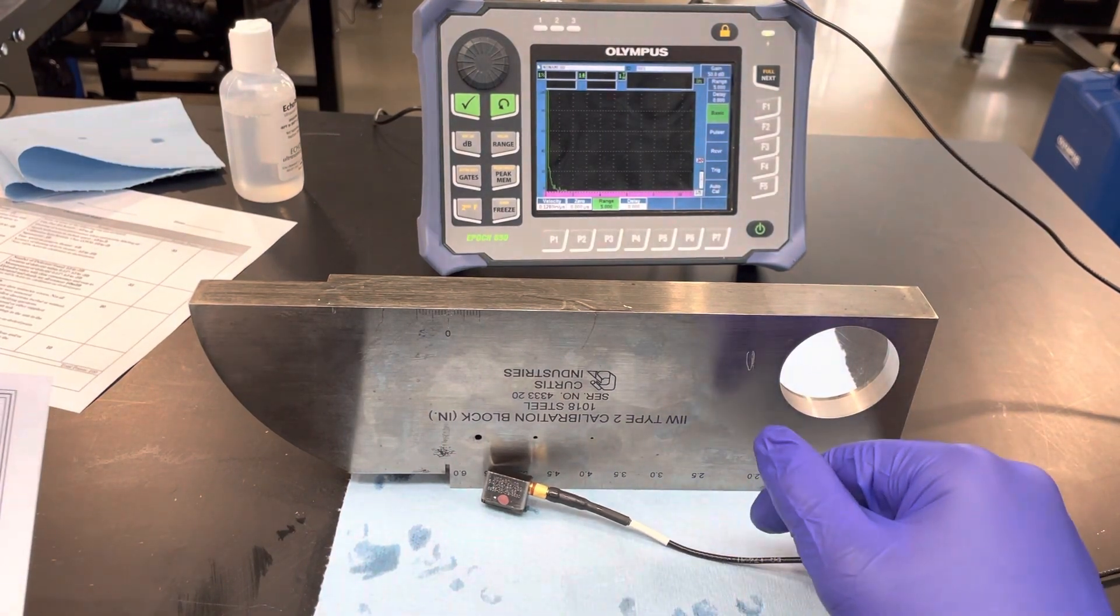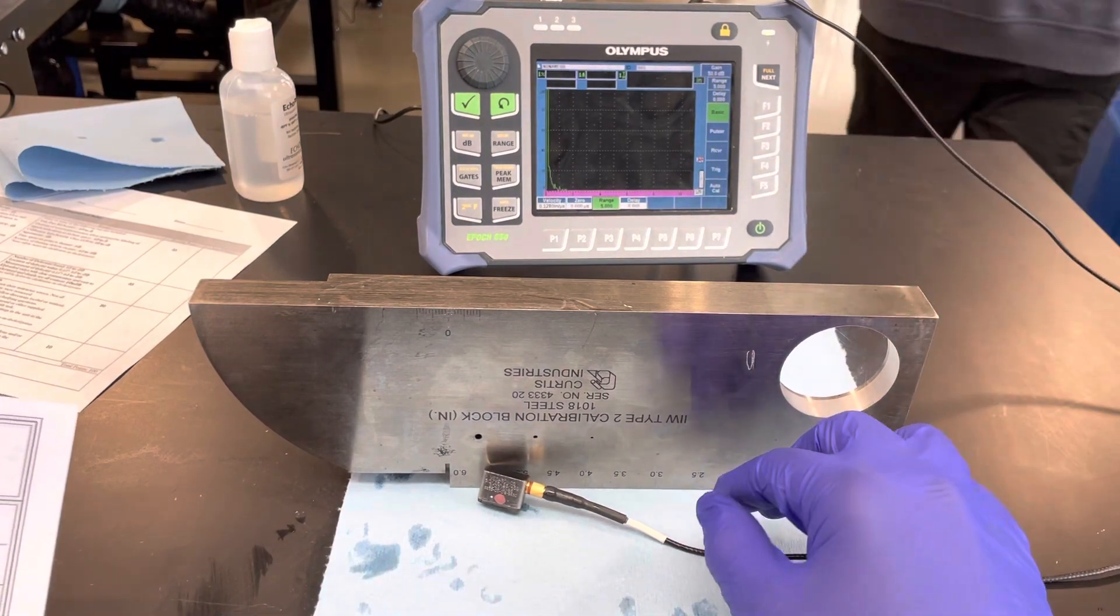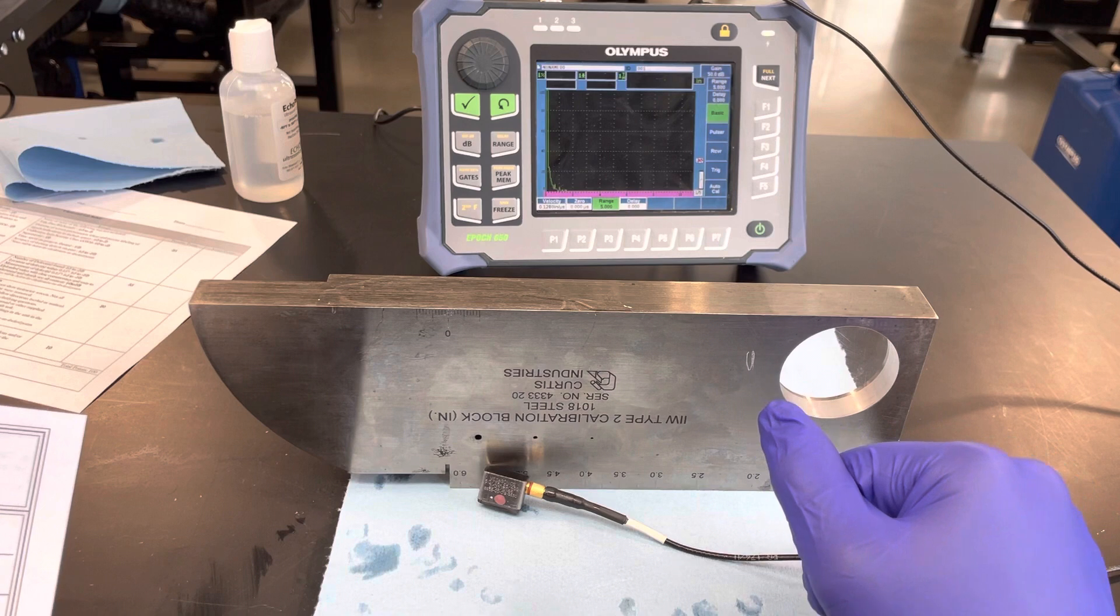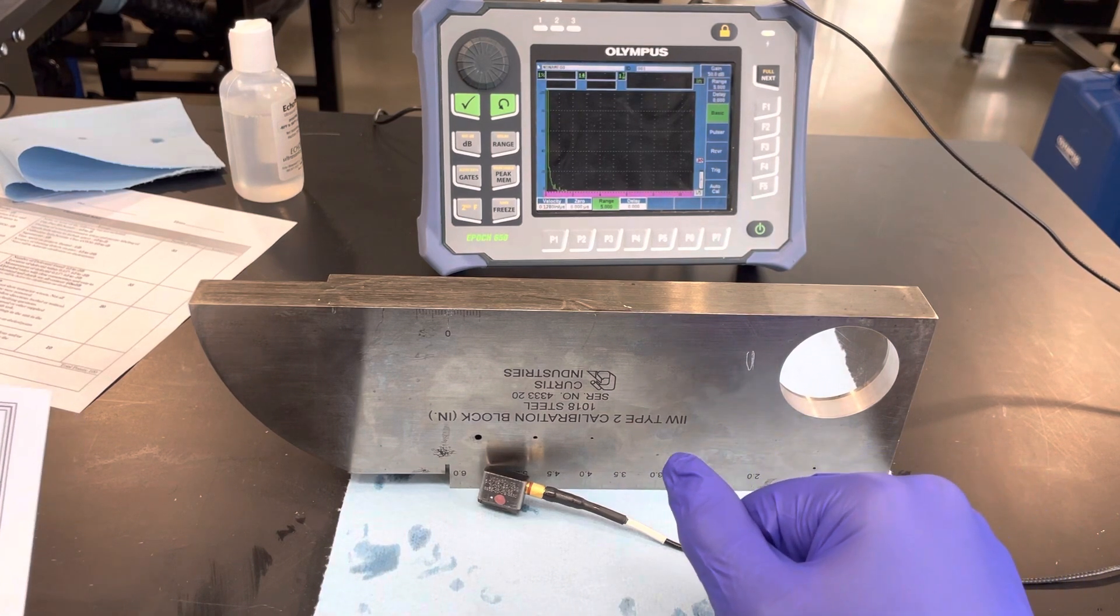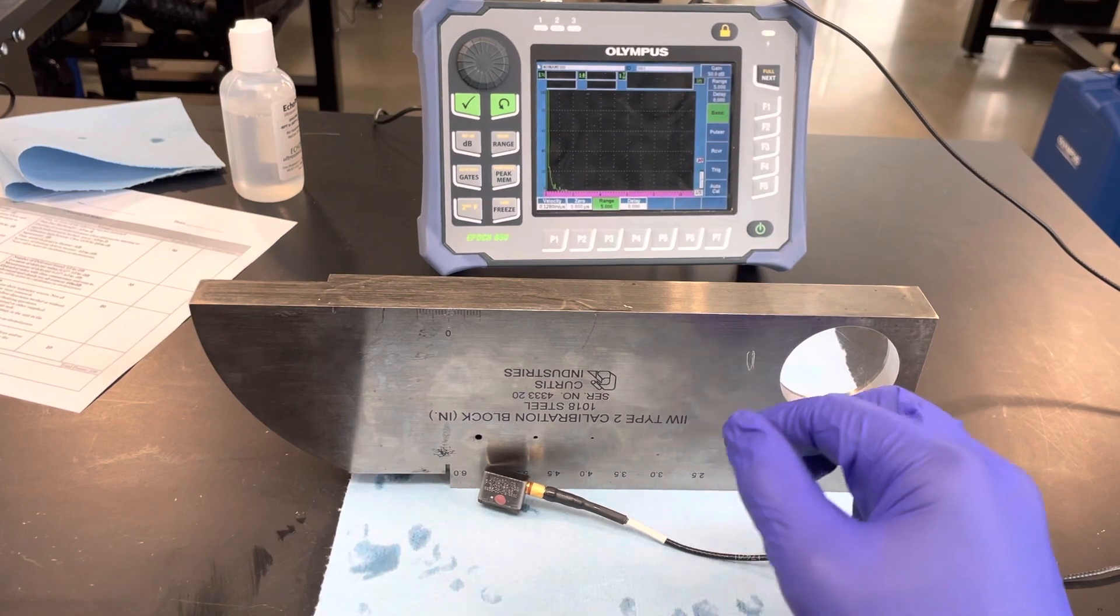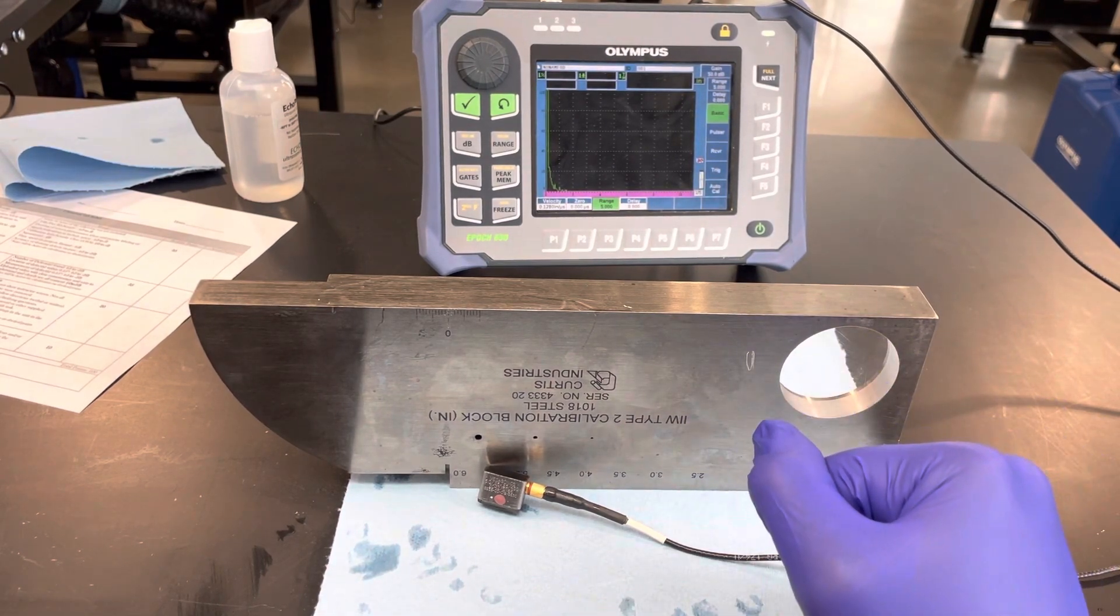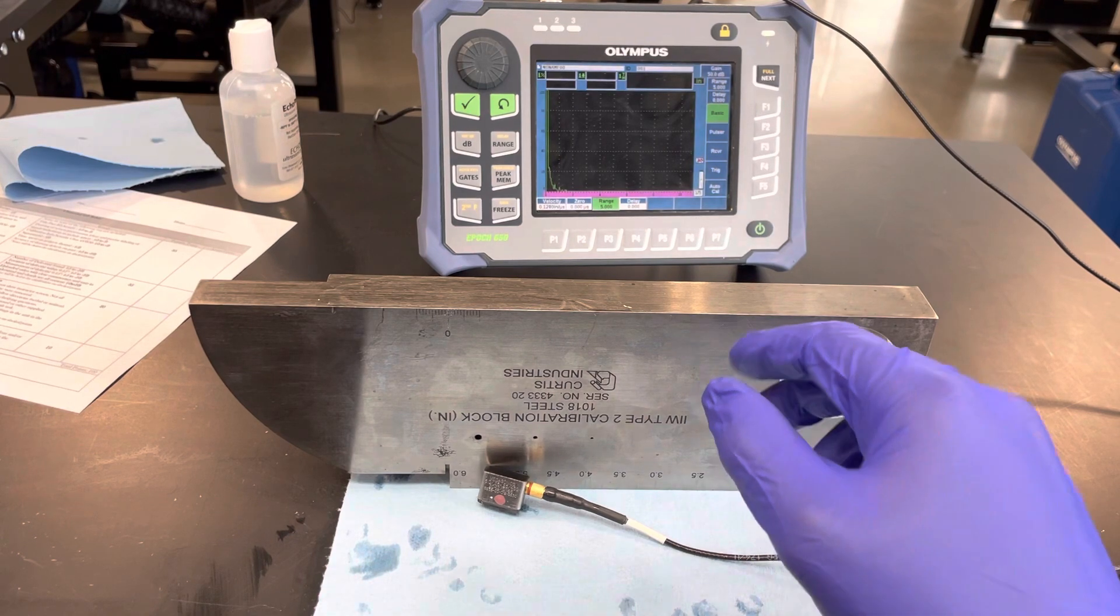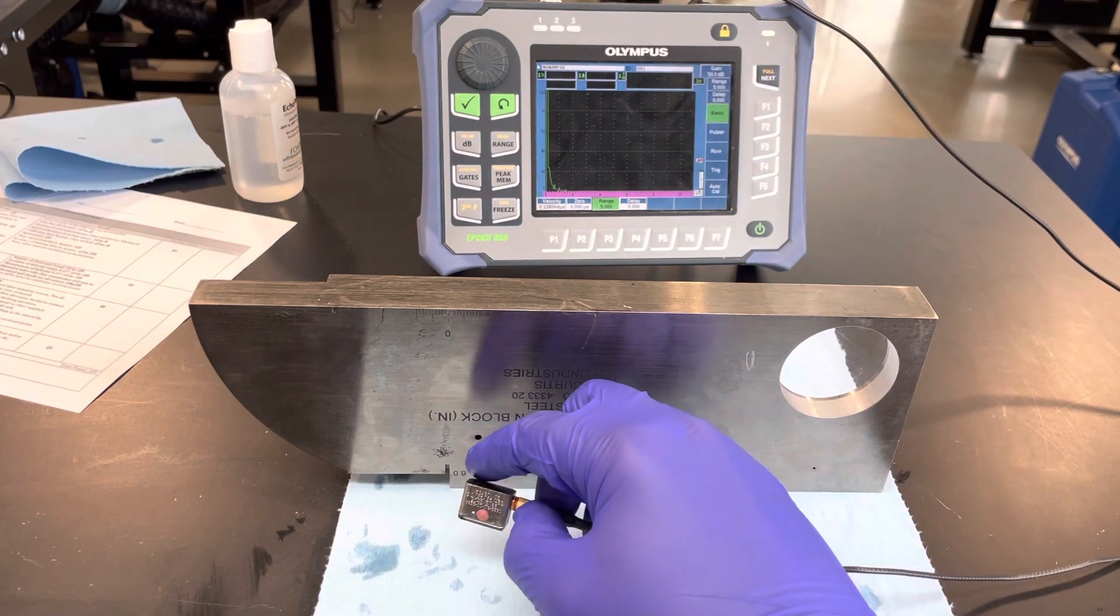We're using that Epic 650 and a five megahertz steel transducer at a 45 degree angle. Some of our settings: we're at 50 decibels, velocity at 0.128, no delay, range of five.